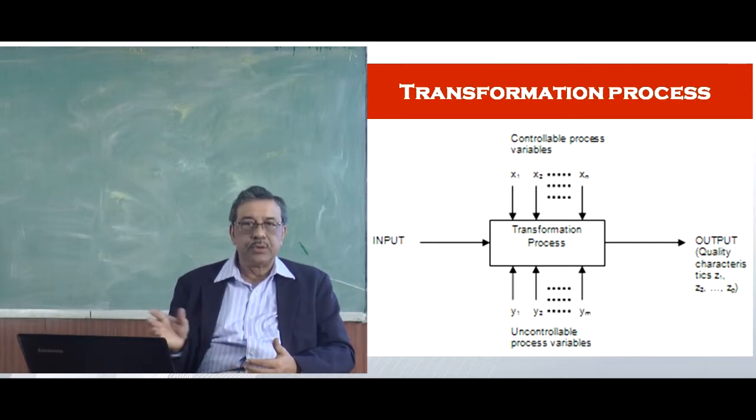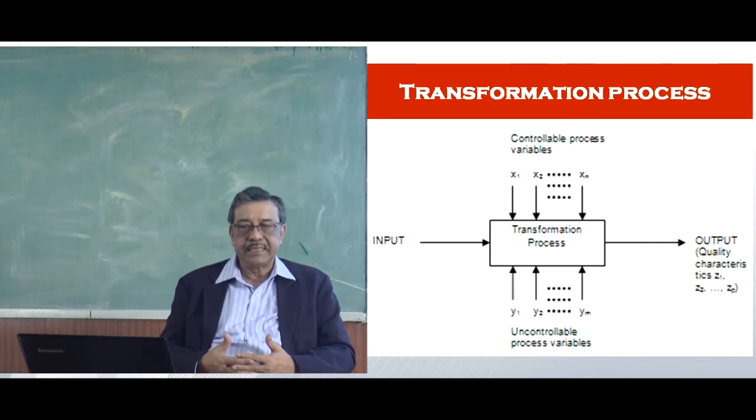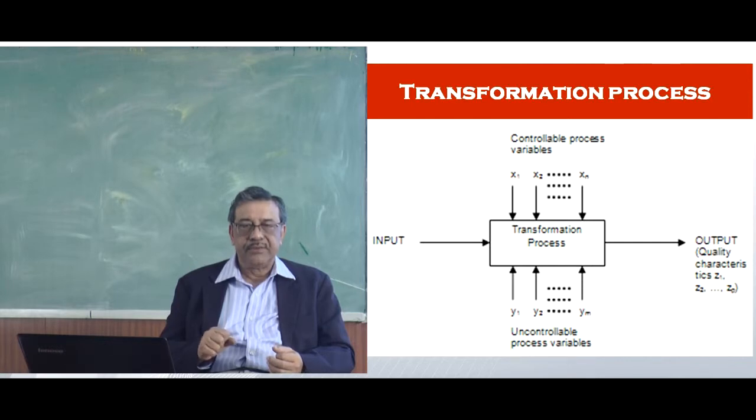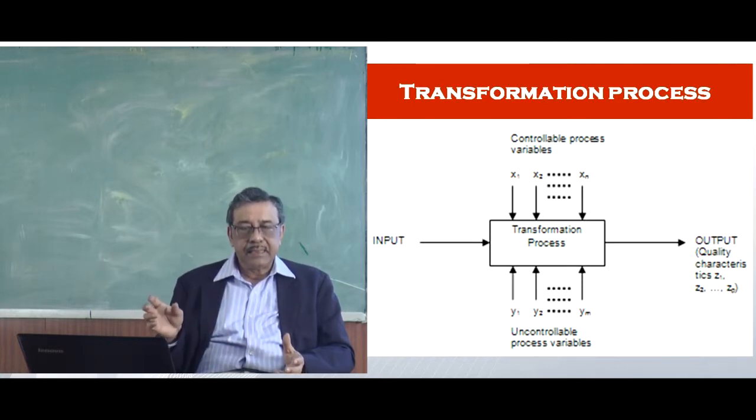These are defined as x1, x2 and so on and there are certain uncontrollable process variables which we do not have control on. The transformation takes place with x and y and finally you get an output z and you are trying to optimize the characteristic of an output by controlling the controllable variables. I will just give you an example just to make it a little bit clearer.